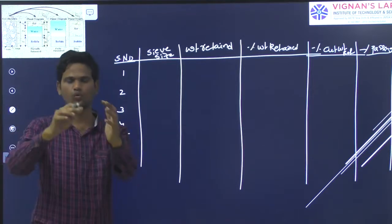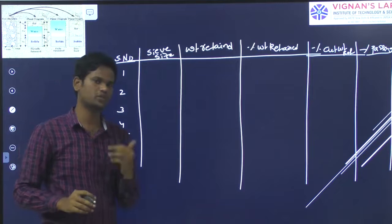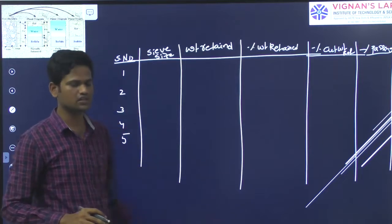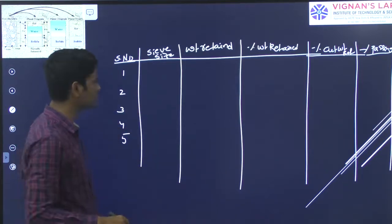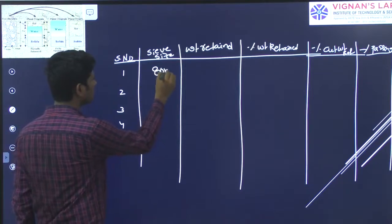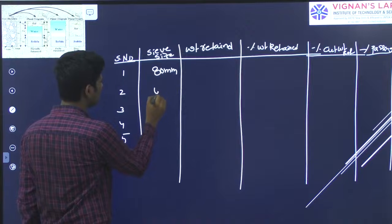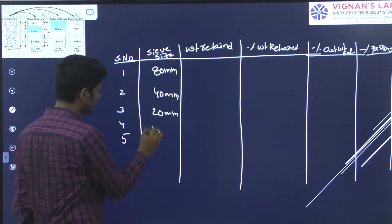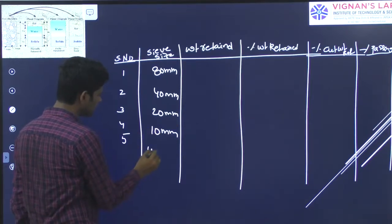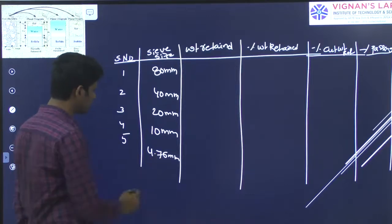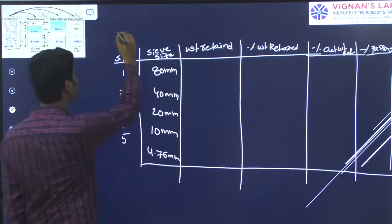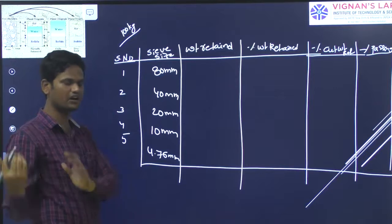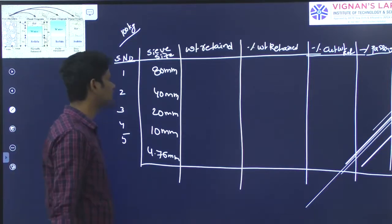I am taking sieves of size 80 mm, 40 mm, 20 mm, 10 mm, and 4.75 mm. A sieve is a metallic steel mesh with different openings available between the mesh. Based on these openings, we identify what type of sieve it is. The size of the opening determines the name of the sieve — for example, 2 mm opening is called a 2 mm sieve, 4.75 mm opening is called a 4.75 mm sieve, and 10 mm opening is called a 10 mm sieve.